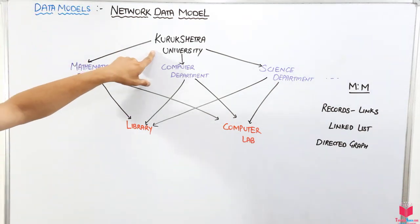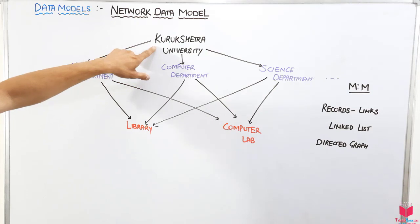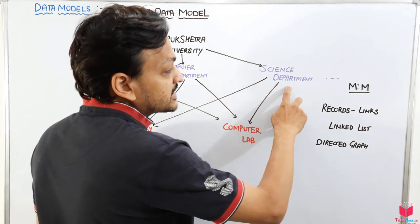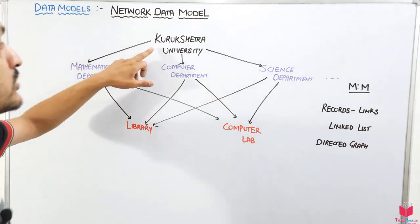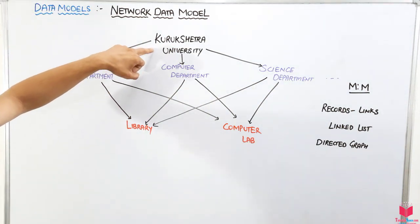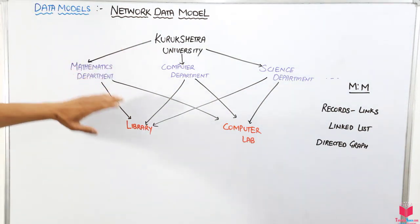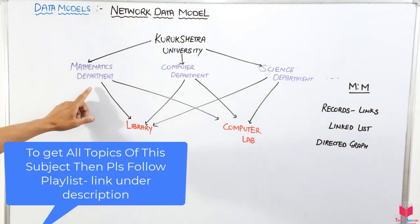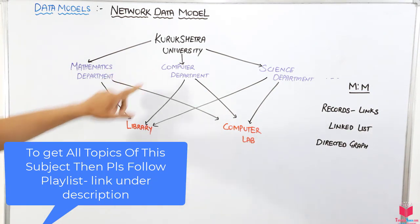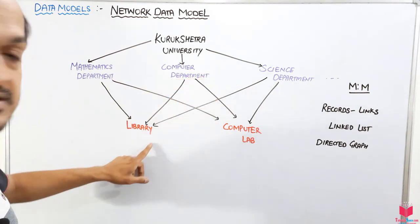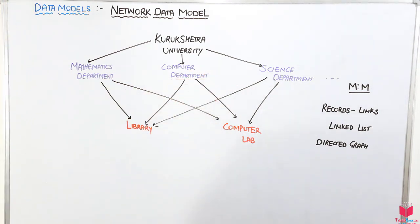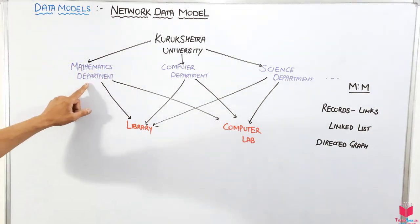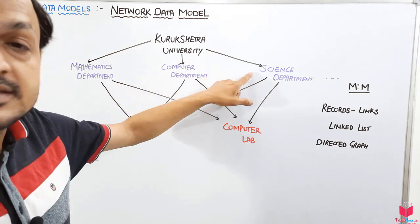Let's suppose there is a Kushchev University. This university has many departments: the Mathematics Department, Computer Department, and Science Department. This university node is also known as the root node. The university has a library and a computer lab. The library can be accessed by the Mathematics, Computer, and Science departments.